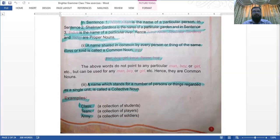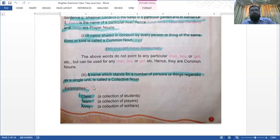Number three: a name which stands for a number of persons or things regarded as a single unit is called a collective noun. For example: class - a collection of students, team - a collection of players, army - a collection of soldiers. These are called collective nouns.